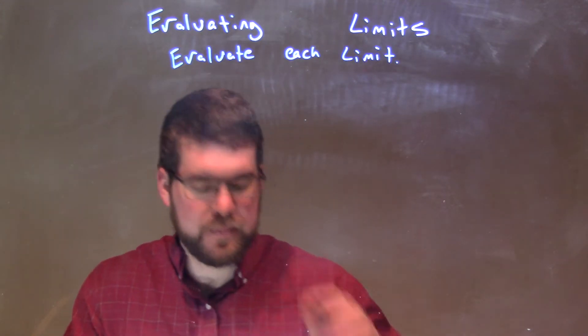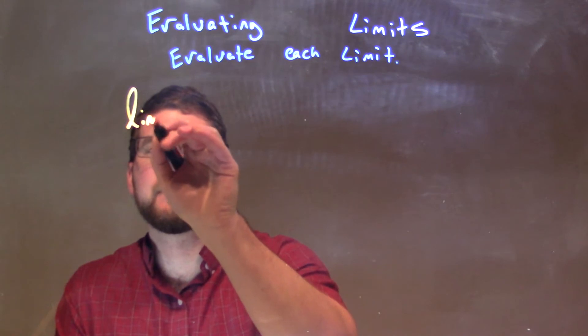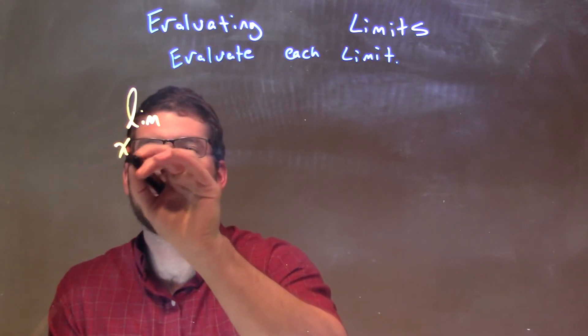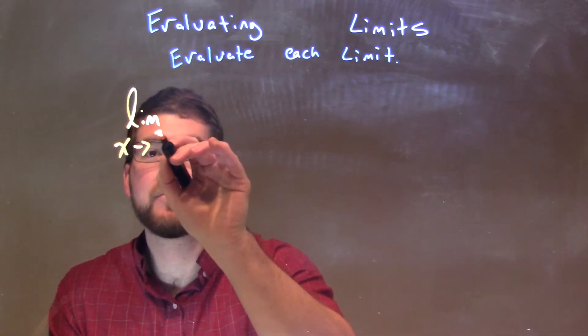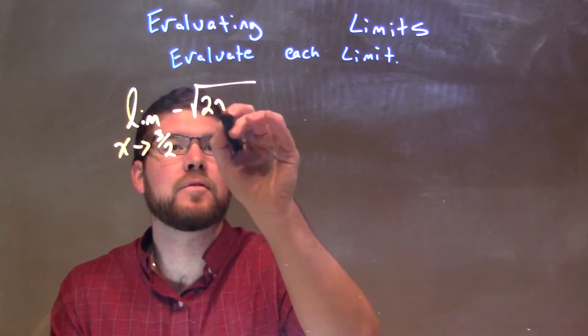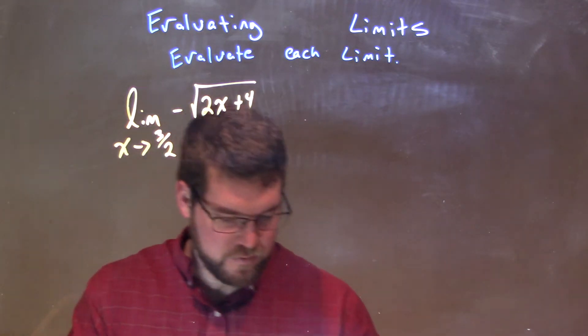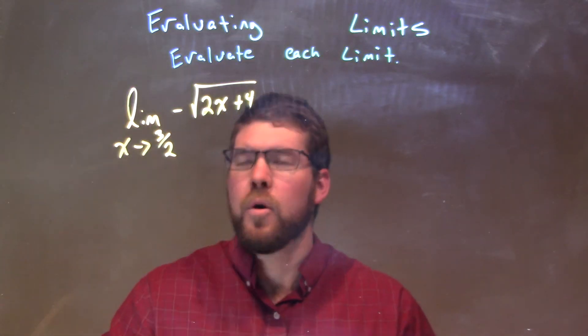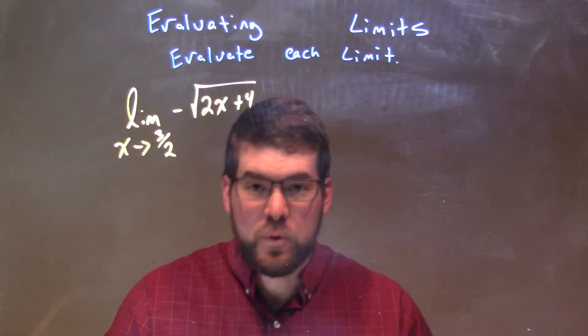If I was given this limit, the limit as x approaches 3/2 of negative square root of 2x plus 4. Well, from there, we have a root function.